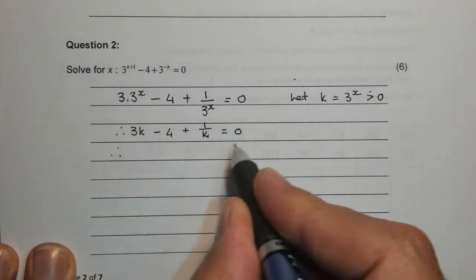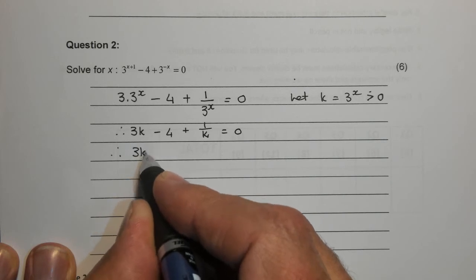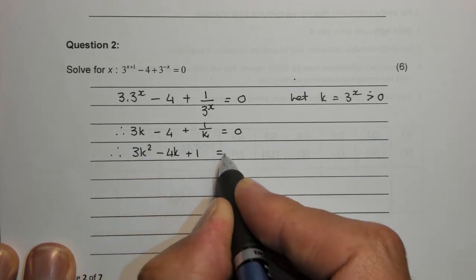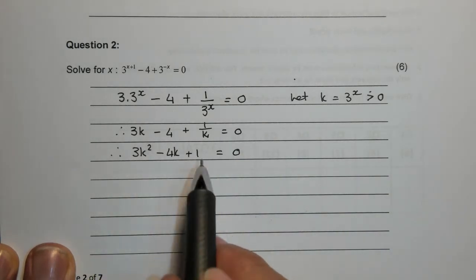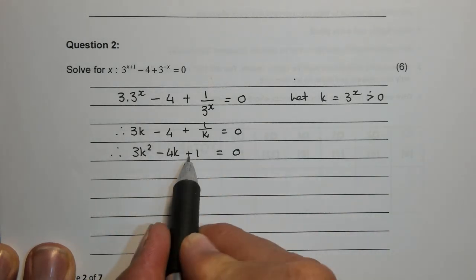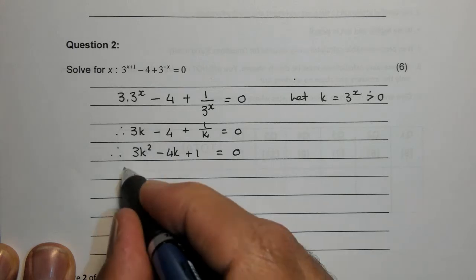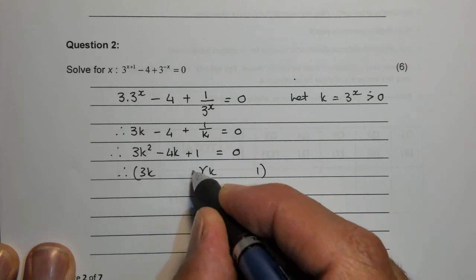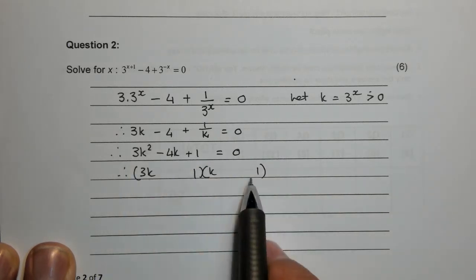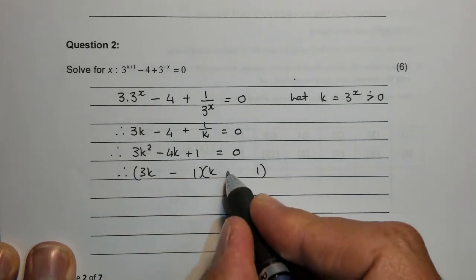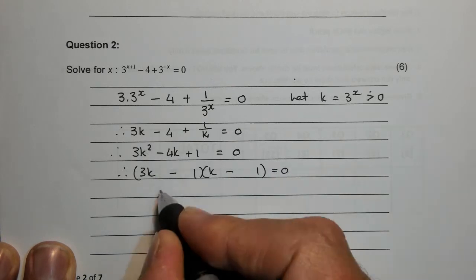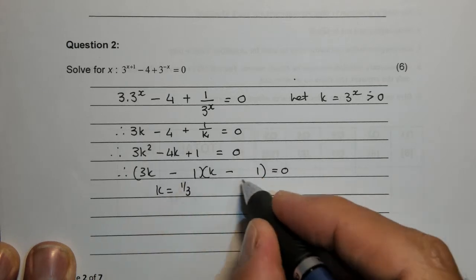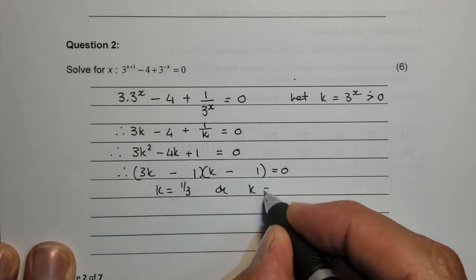Once you've plugged the k in, minus 4 plus 1 over k, and you solve for k, any negative answer you may omit because it's an invalid answer. So if I multiply throughout with k I get 3k squared minus 4k plus 1 which is 0. The factors are 3k minus 1 times k minus 1 equals 0. So I get k is equal to a third, and k is 1.